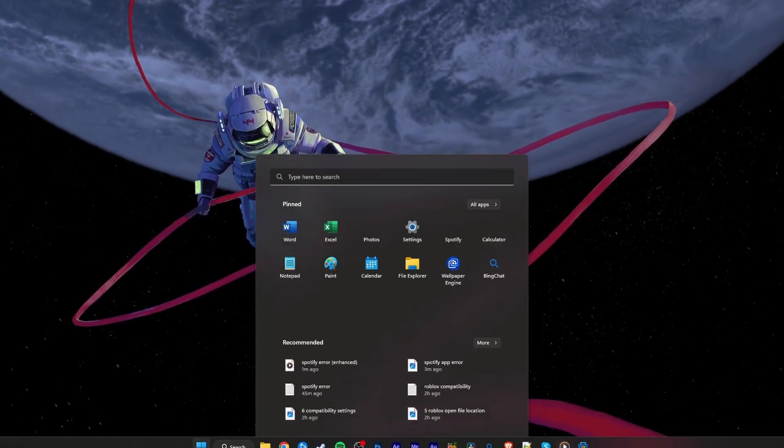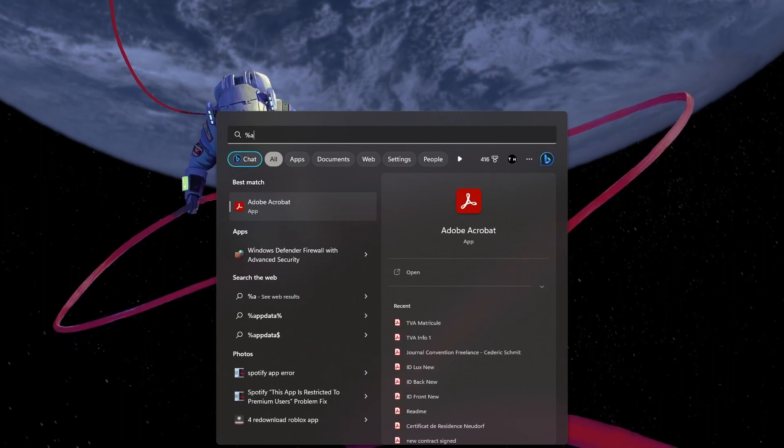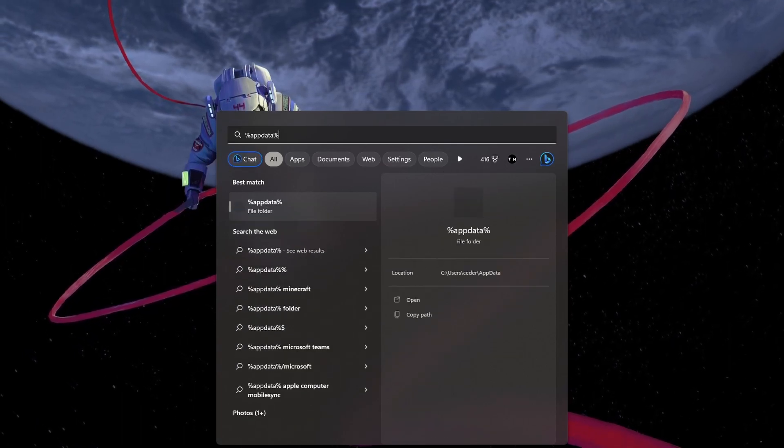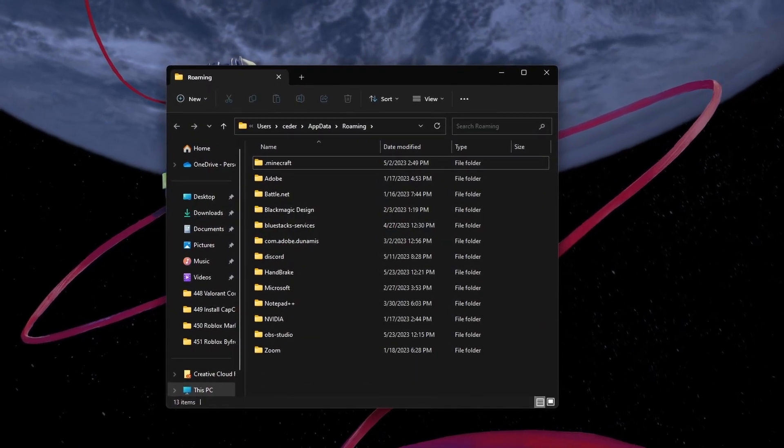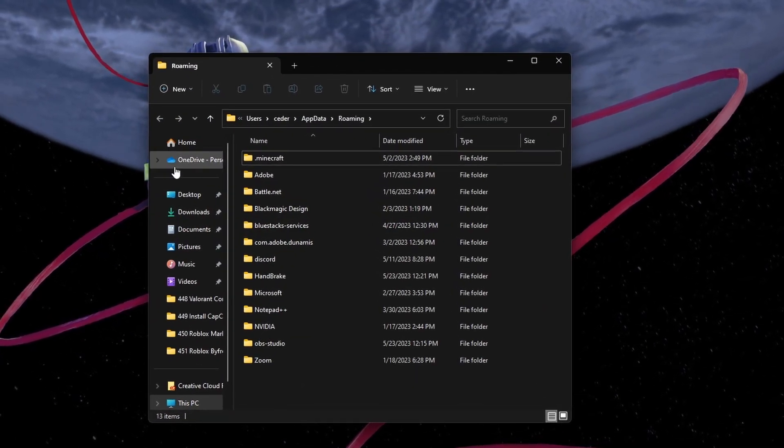First, make sure that the Spotify app is not running on your PC. In your Start menu, search for %AppData% and hit Enter. Your File Explorer will open up.